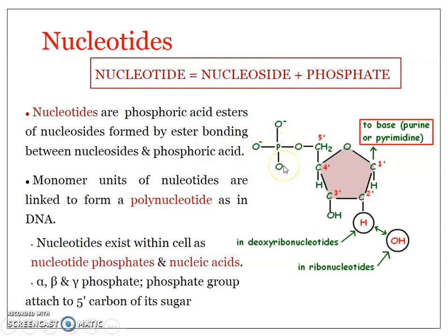Ribonucleotides or deoxyribonucleotides can have a single phosphate molecule attached, in which case we call it a nucleotide monophosphate. It can also be present as a nucleotide diphosphate, where one additional phosphate molecule is attached, or as a nucleotide triphosphate, where three phosphates in a row are attached to the five prime carbon of the pentose sugar. So nucleotide monophosphates, diphosphates, and triphosphates are all found in the cell along with nucleic acids.